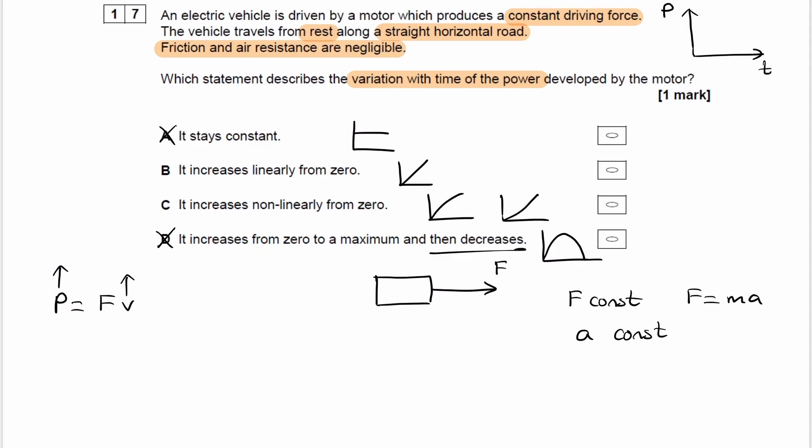We don't really have any numbers here. All we really know is that the vehicle travels from rest. But that's okay, we don't really need numbers in this case. We're just trying to see how velocity varies with time, so an equation will suffice.